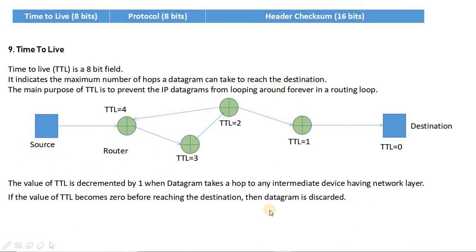For example, the source has a packet to send, and obviously it will go through different routers — which we can call hops and switches. The source will decide how many hops it can take to reach the destination. For example, the source decides that TTL is 4; this is the first router, which is the first hop.